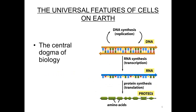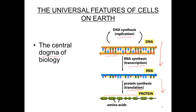The central axiom of biology — historically named the central dogma of biology, though there's nothing religious about it — is that DNA makes RNA makes protein. This is the direction of information flow. DNA replicates itself in a process called replication; portions of DNA are converted to RNA in a process called transcription; and then the mRNA is converted to protein by a process called translation. The information stored in nucleotides is converted to a string of 20 different amino acids that make up all proteins.